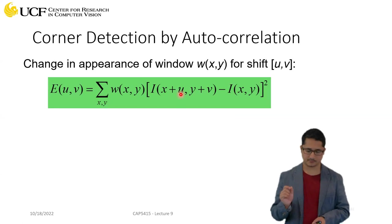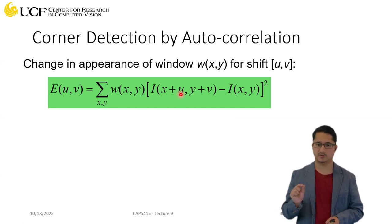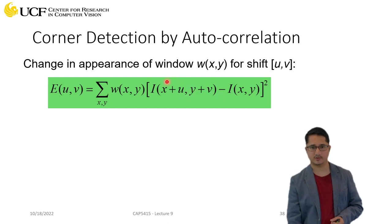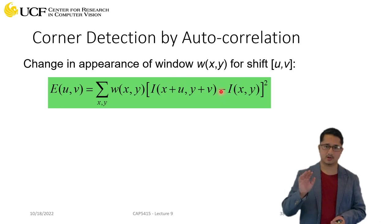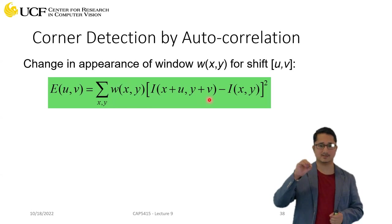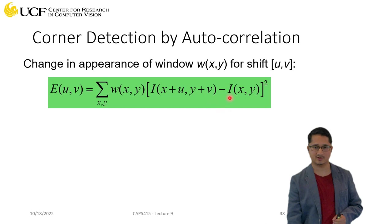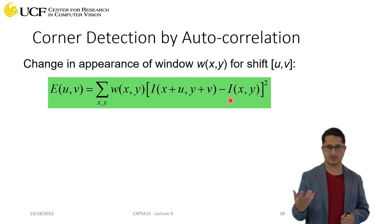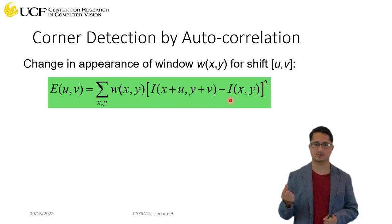You square that difference value, and the weighting function — which can be a step function or Gaussian — pays more attention to the center location and less to locations far from the center. If at a given location the surface is flat and intensity isn't changing, the subtraction always gives zero. So at a flat surface, autocorrelation gives zero — the point is not interesting. If the intensity is changing a lot in the neighborhood, the value gets bigger, meaning higher autocorrelation, which helps determine interesting points.